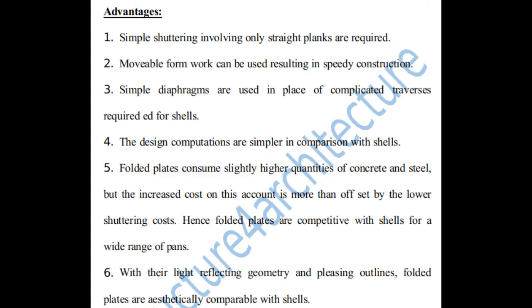Advantages of the folded plate: First, simple shuttering involving only straight planks is required. Second, movable formwork can be used, resulting in speedy construction. Third, simple diaphragms are used in place of complicated traverses required for shells. Fourth, the design computations are simpler compared to shells. Fifth, folded plates consume slightly higher quantities of concrete and steel, but this increased cost is more than offset by the lower shuttering cost — so folded plates are competitive with shells for a wide range of spans.